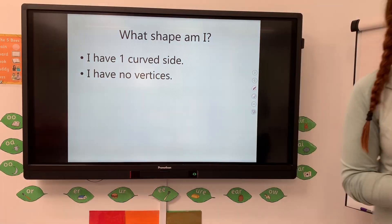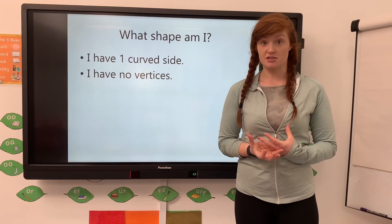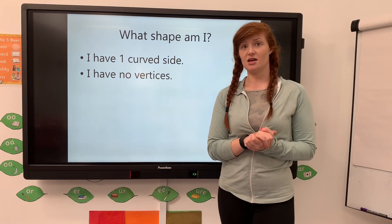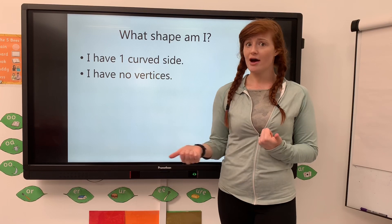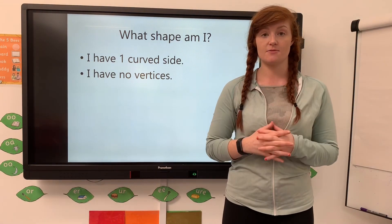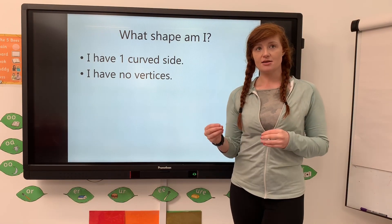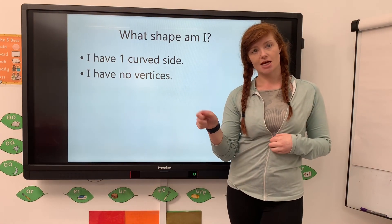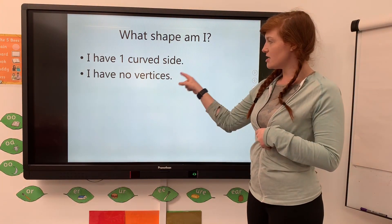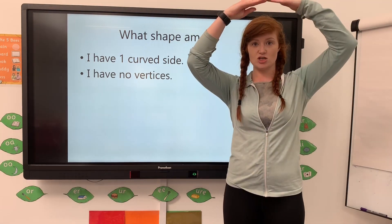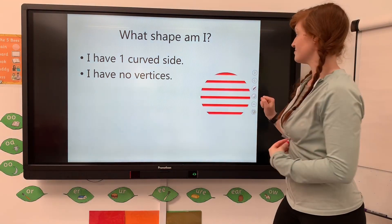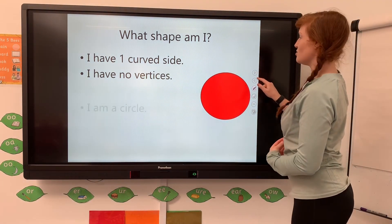Next one - what shape am I? I have one curved side and no vertices. I'm thinking of shapes: a square, rectangle, triangle, pentagon, hexagon, heptagon, octagon all have straight sides. So I'm deciding between a semicircle and a circle, as both have a curved side. But it has no vertices - a semicircle has two vertices at the ends, so it's got to be a circle.